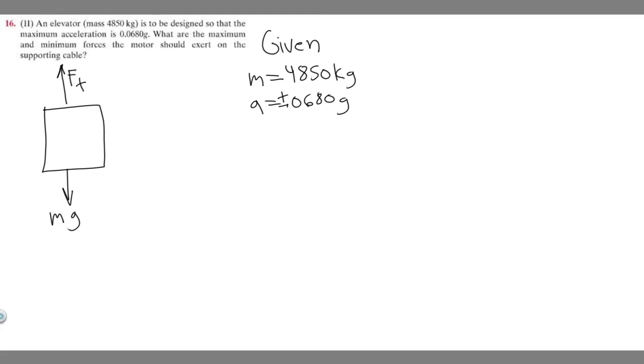In order to solve this, you need to know this formula: F_T, the force of tension, minus mass times gravity equals mass times acceleration. F_T - mg = ma.